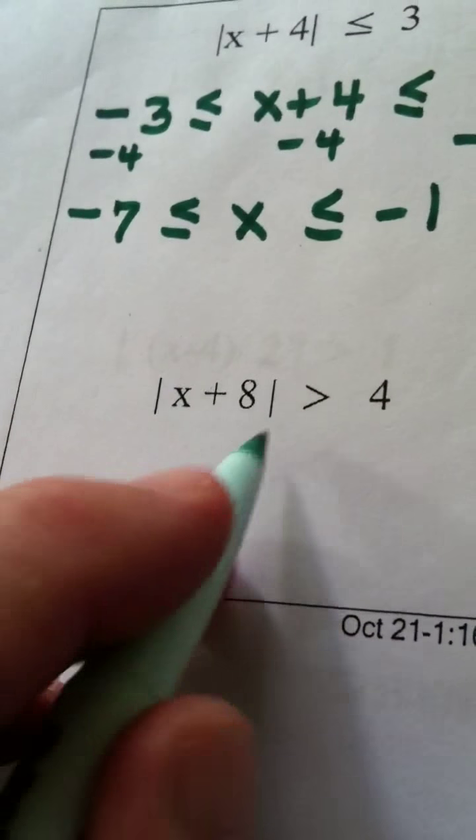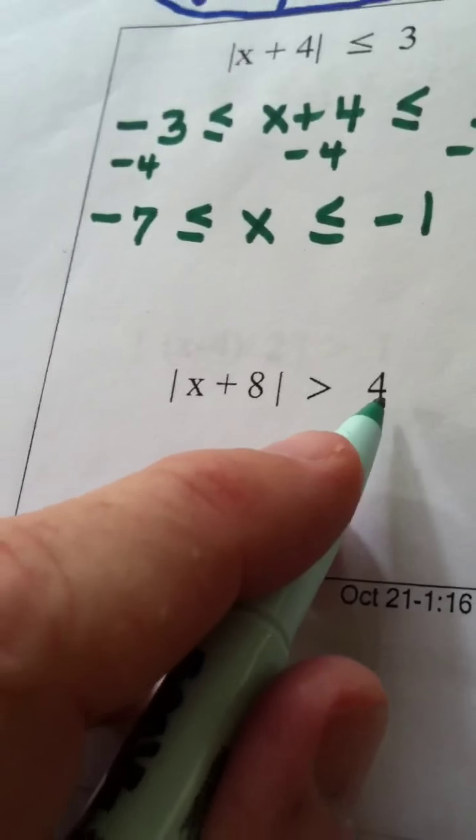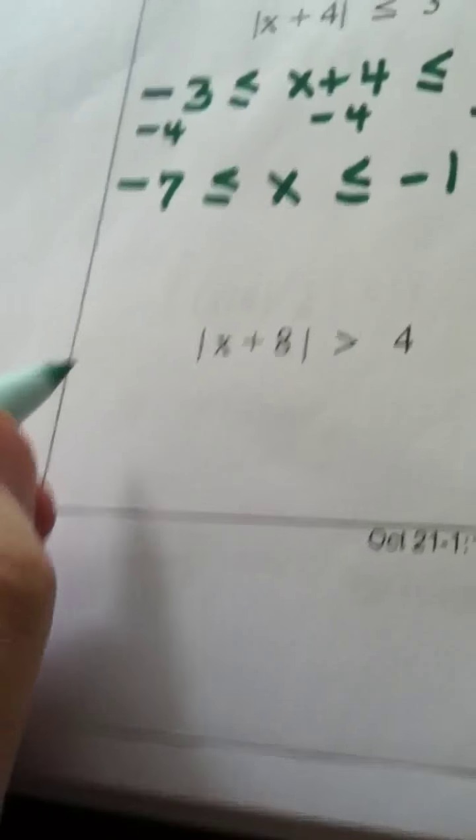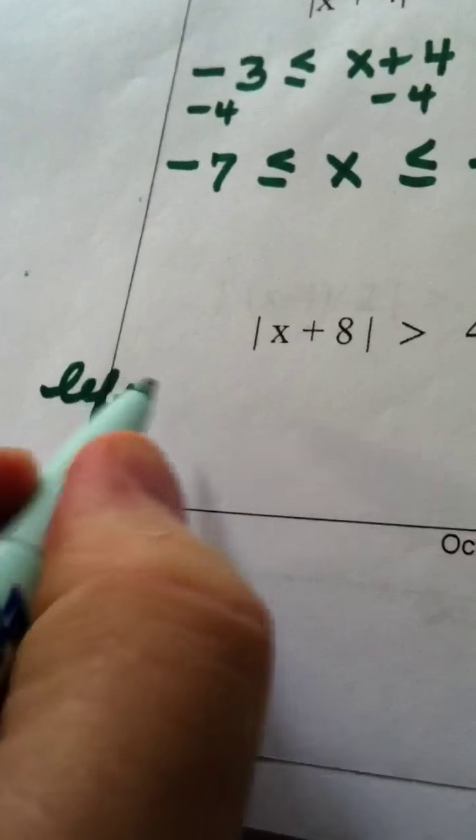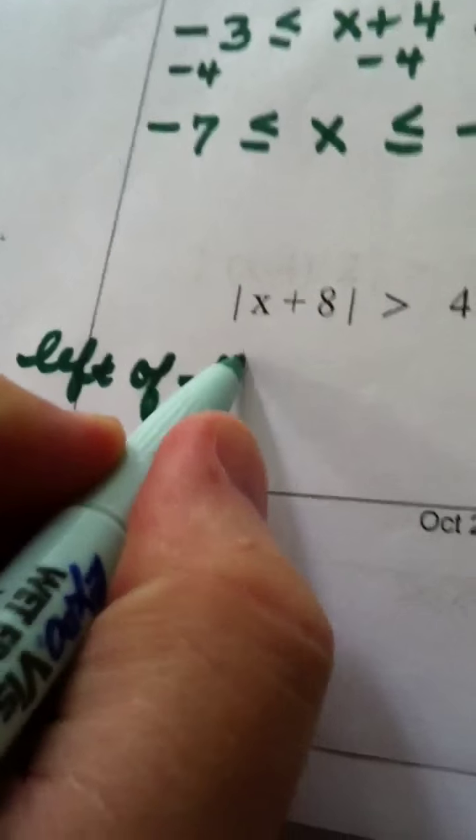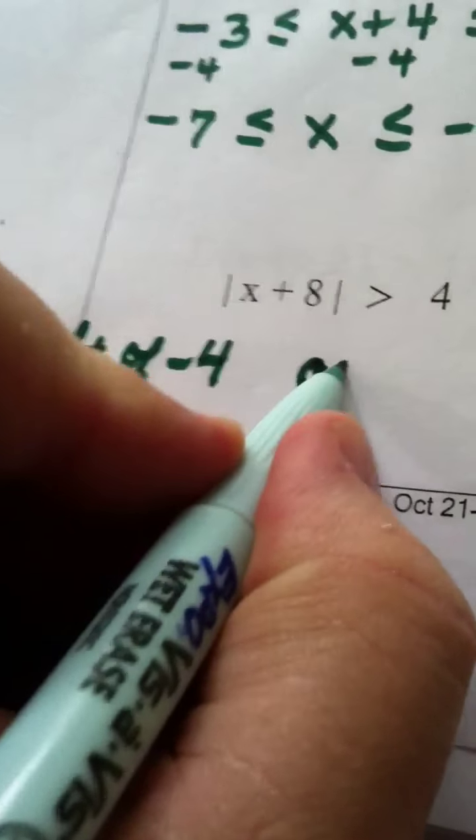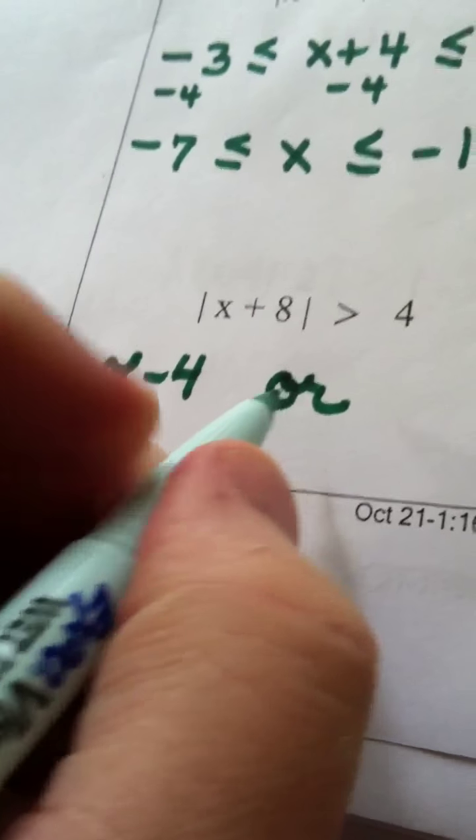It's basically, you have to stay a distance of more than 4 units away from me. So what that means in words is, you are to the left of a negative 4, or, and you must put the word or in your setup.